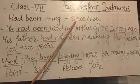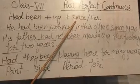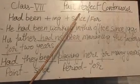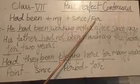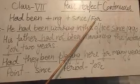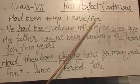Where the time is sure, then we use since — that is called the point of time. And for is used for a period of time.